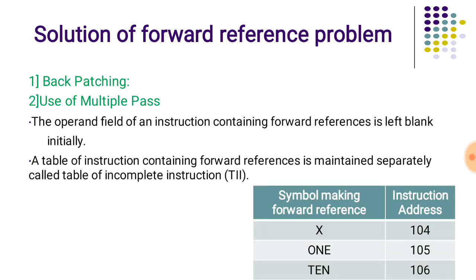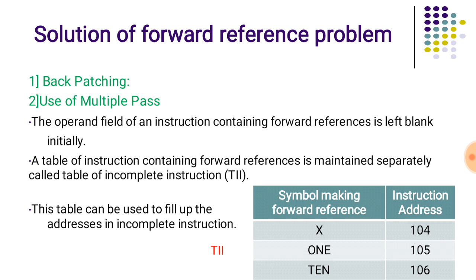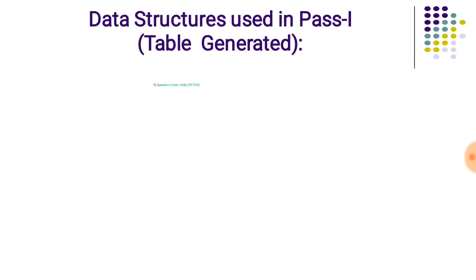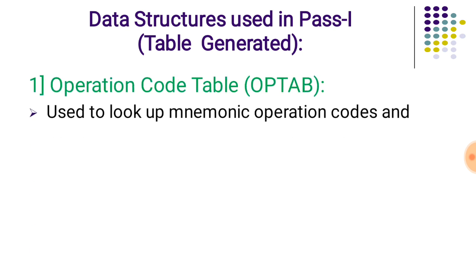Back patching is a process where we keep the symbols making forward reference initially blank, because the assembler cannot locate their addresses initially. Their entries are made in the table of incomplete instructions. So here, three symbols X, 1, and 10 making forward reference have their addresses left blank initially. Afterwards, once their definitions are encountered, addresses for X, 1, and 10 are generated and filled in. In this way we can solve the forward reference problem occurring in a pass one assembler.